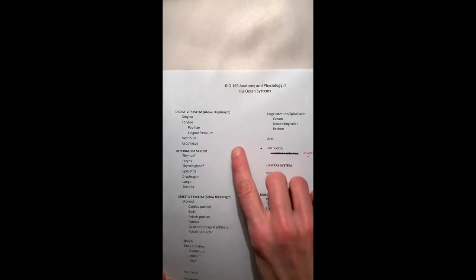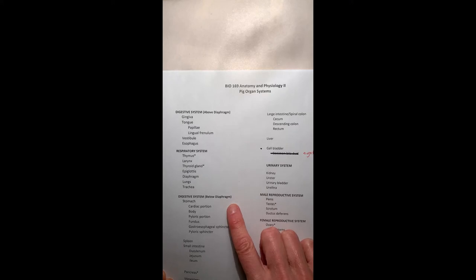The thymus, larynx, thyroid gland, epiglottis, diaphragm, lungs, and trachea. We'll come back to the esophagus when we move down to the diaphragm and look at the stomach down to the intestine. So let's do the respiratory system.